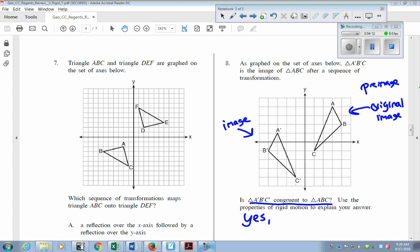But they want us to use the properties of rigid motion to explain your answer. So the next thing we want to do is use the ones we just talked about—translation, rotation, reflection—to prove that these are congruent. You want to make sure that you say which ones. So in this case, it's going to be a reflection.